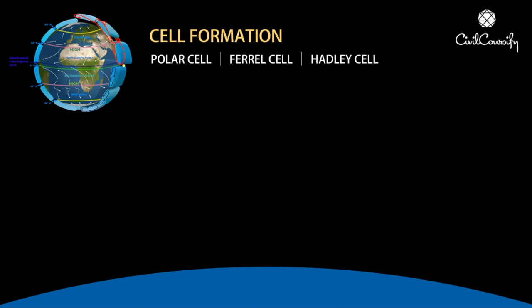We will start with the equator and move towards the north pole, and we will try to understand the cell formation process. We will see the whole process in this direction as our reference. Let us assume this is the zero degree equator and this is 90 degrees north pole. Let us begin with the equator.